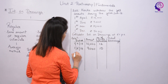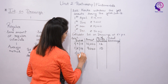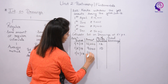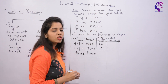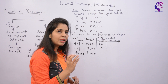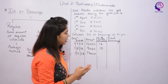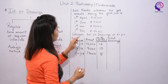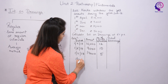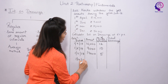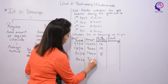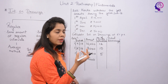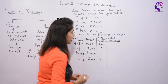Then 1st November, amount 14,000. November to March: November, December, January, February, March — that is 5 months. Then 1st December, amount 5,000. December to March: December, January, February, March — that is 4 months. That completes the table.